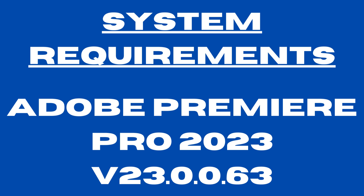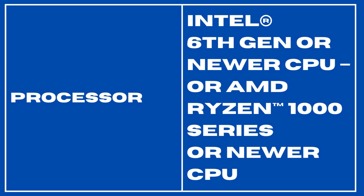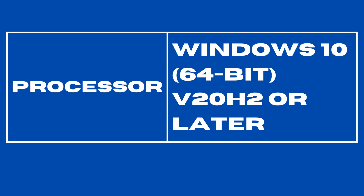What are the minimum system requirements to download Adobe Premiere Pro 2023 crack v23.0.0.63? The first requirement is the processor — it should be an Intel 6th generation or newer CPU, or AMD Ryzen 1000 series or newer CPU. For Windows, it should be Windows 10 64-bit v20H2 or later.